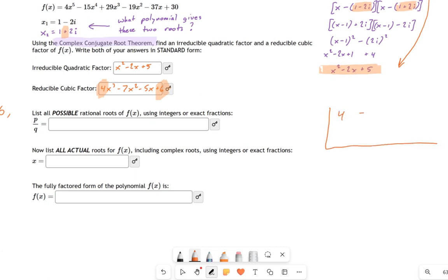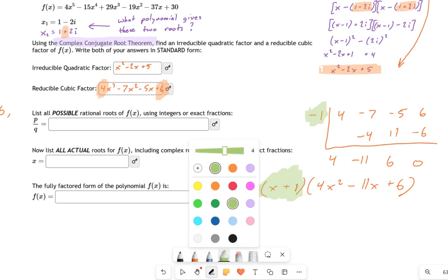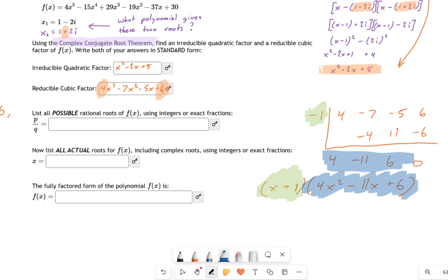So I have my coefficients: 4, negative 7, negative 5, and 6 of that cubic function. I'm going to guess negative 1 because I know that works. So I get 4, negative 4, negative 11, positive 11, positive 6, negative 6, and 0. Another remainder of 0. So what that means is this is going to give me x plus 1 and 4x squared minus 11x plus 6. Now compare those coefficients. I want you to really be sure you see where these things are coming from. This negative 1 produced this factor of x plus 1. And this answer right here, these coefficients, produced this factor right here. So you do likewise with your problem, and you should be able to work this down into factored form.